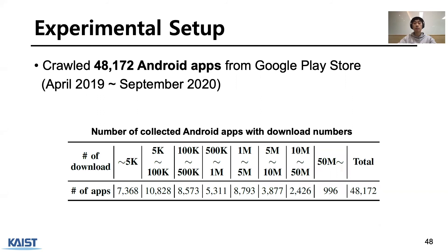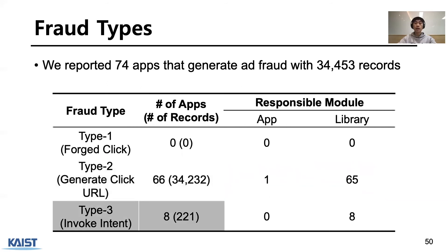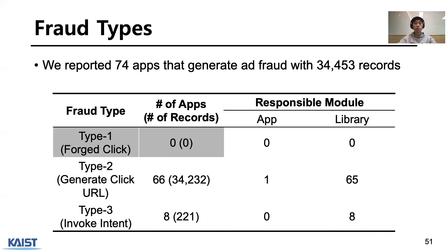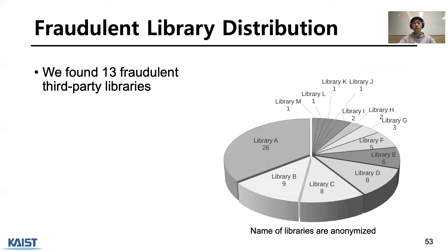I'll explain our evaluation results. We crawled 48,000 apps from the Google Play Store and used them in our experiment. We identified 74 apps that generate ad fraud, with 34,000 fraud records. Type 2 fraud is most common, with 66 Type 2 fraud apps generating click traffic without interaction. Additionally, there are 8 Type 3 ad fraud apps generating cross-app intents without interaction. There was no Type 1 fraud — we confirmed no touch events occurred during the experiment. Fraudetective found that 73 of 74 apps commit fraud from third-party libraries, meaning 98% of fraud behavior originates from embedded third-party libraries. We found 13 fraud third-party libraries in this experiment.